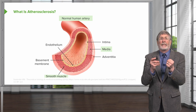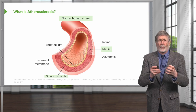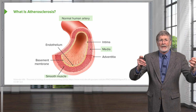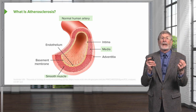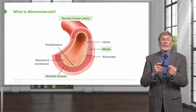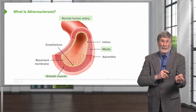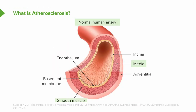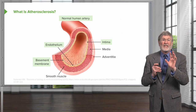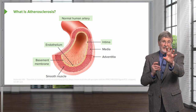That smooth muscle media is an important source of tone and integrity to the vessel wall. When that smooth muscle relaxes, the wall dilates; when it contracts, the wall constricts — and we can control blood pressure and flow into the tissues in that way. The next layer in from the smooth muscle media is the intima, which usually has very little connective tissue — basically an endothelium sitting on a basement membrane and just a little bit of extracellular matrix. That's the normal vessel.